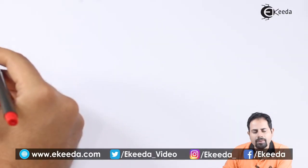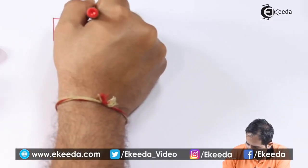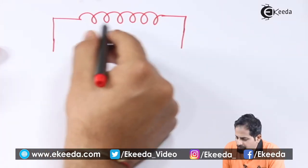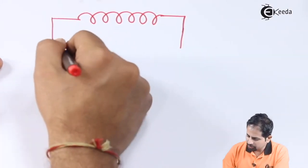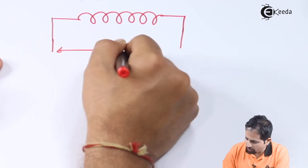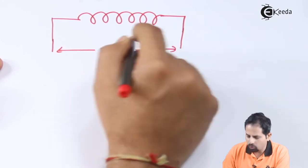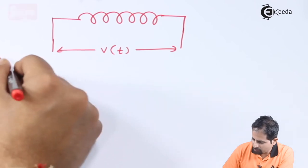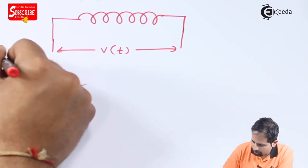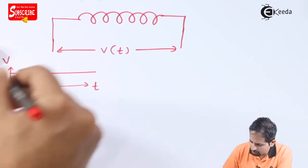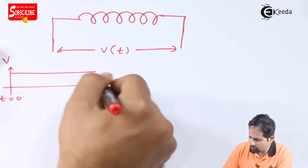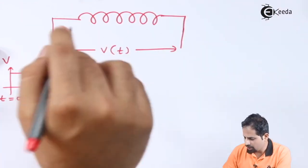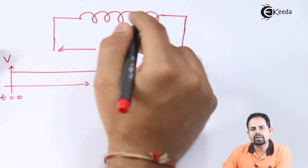Let us take the example of an inductor. Suppose I have an inductor to which I am applying some voltage V of t, a voltage which is a function of time. Suppose I am applying a DC voltage V, starting at time t equal to 0, increasing as t goes to infinity. So how does this inductor react?